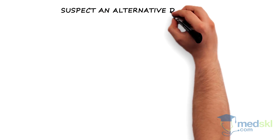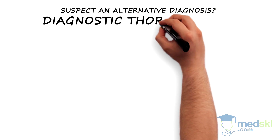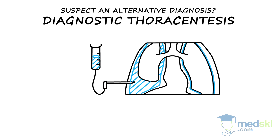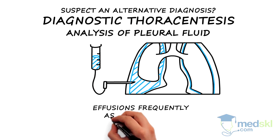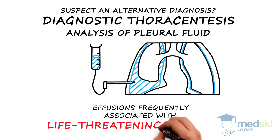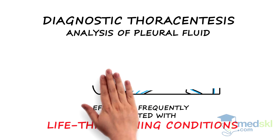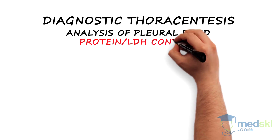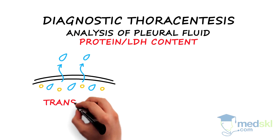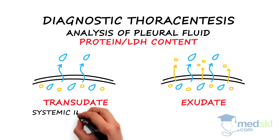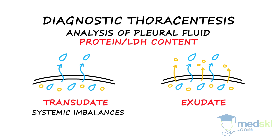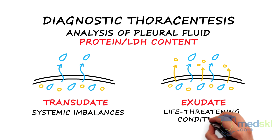If these conditions are absent, or if there is any clinical reason to suspect an alternative diagnosis, a diagnostic thoracentesis with analysis of the pleural fluid is essential, because effusions are frequently associated with life-threatening conditions. The protein and LDH content in the fluid will determine if it is a transudate or an exudate, which are usually associated with systemic imbalances and life-threatening conditions respectively.